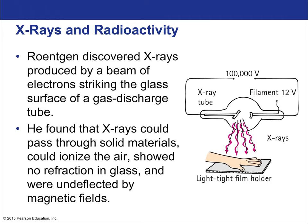Let's start with x-rays and radioactivity. Historically, Röntgen discovered x-rays produced by a beam of electrons striking the glass surface of a gas discharge tube. He found that x-rays could pass through solid materials, could ionize the air, showed no refraction in glass, and were undeflected by magnetic fields. This told Röntgen that x-rays were not charged particles — not like electrons or alpha particles.